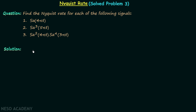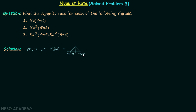Before moving to the solution, we will quickly revise some points already discussed. In the first lecture of the sampling theorem, I took one continuous time signal called the message signal m(t) and said we are assuming it to be a band-limited signal. This makes the Fourier transform M(ω) limited, represented as a triangular pulse which is non-zero only between minus ωm and plus ωm, where ωm is the maximum frequency component.